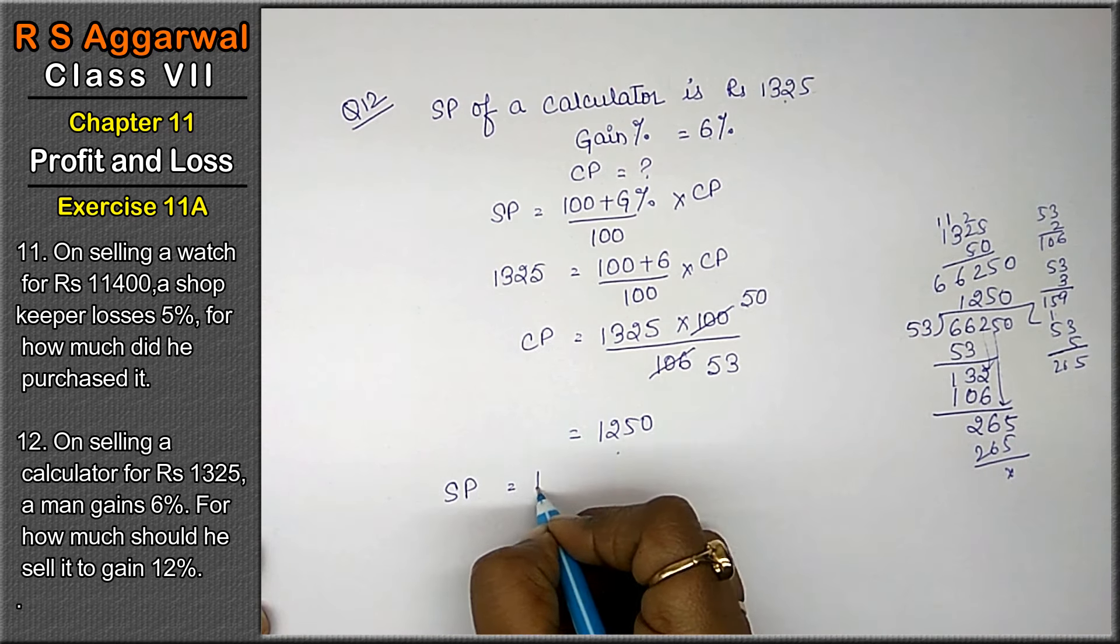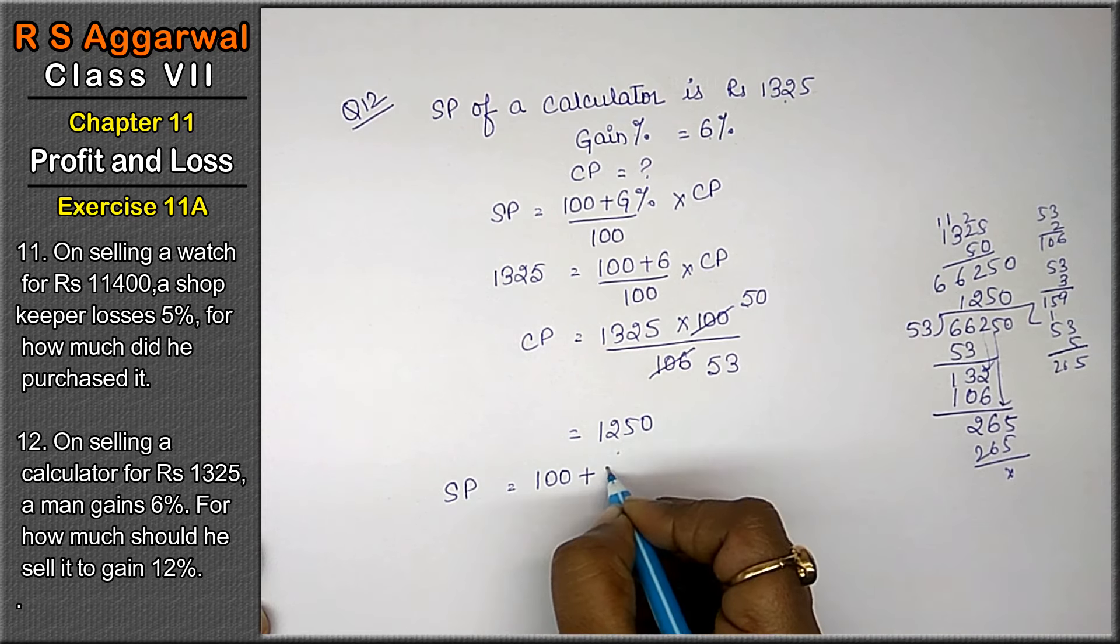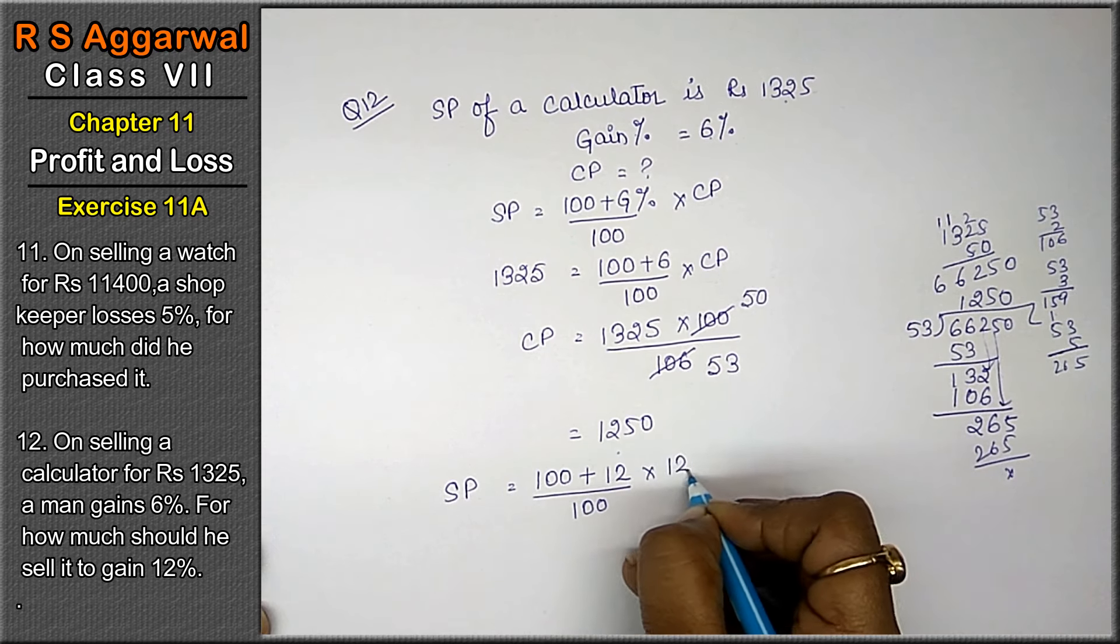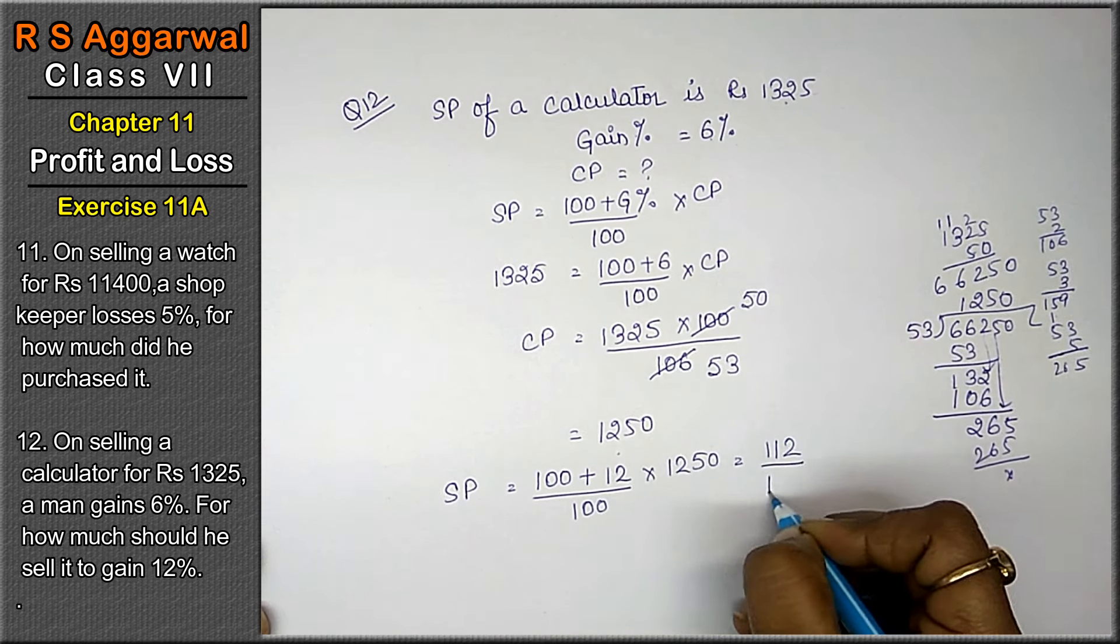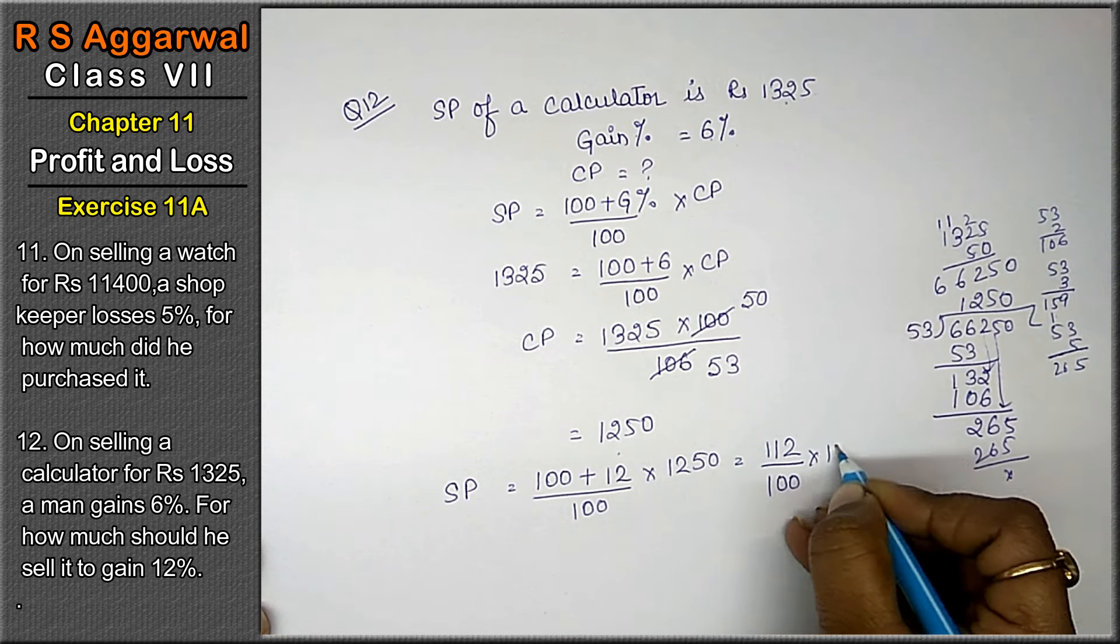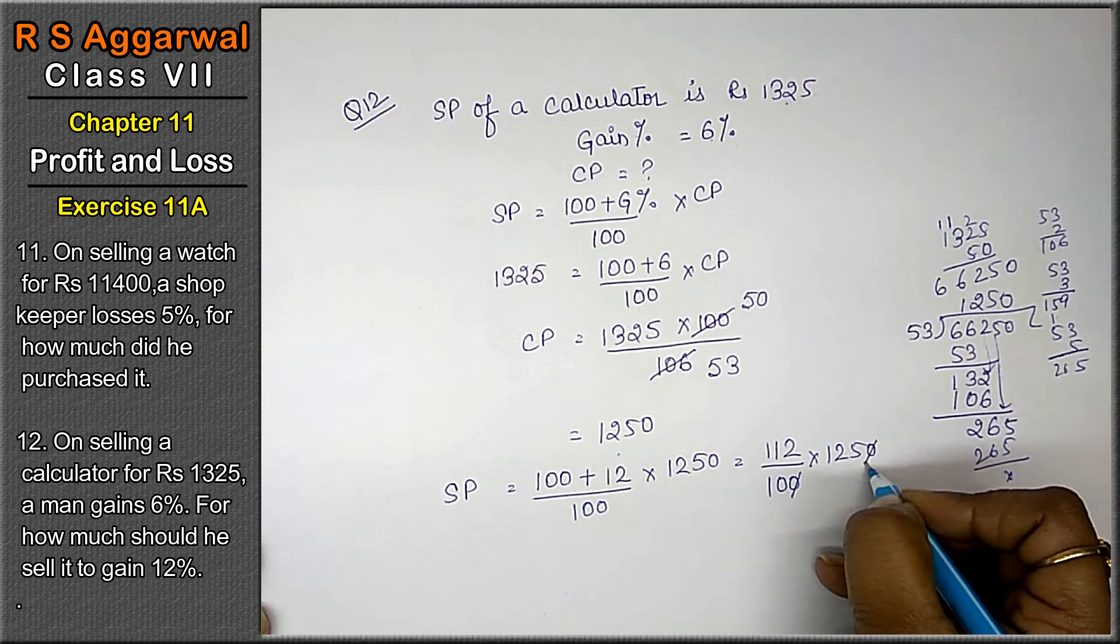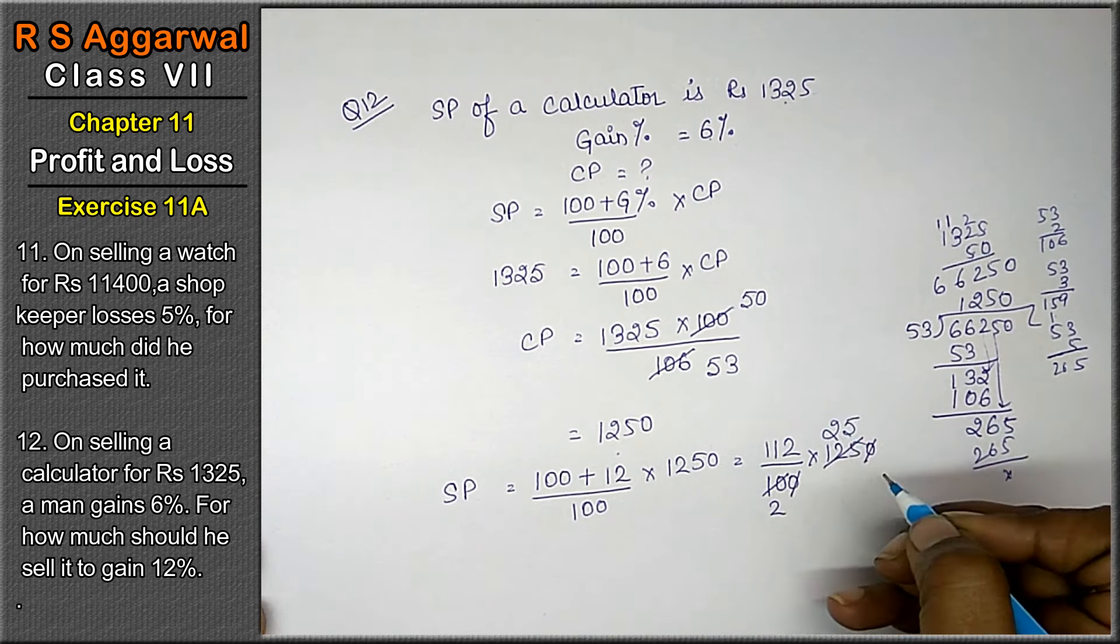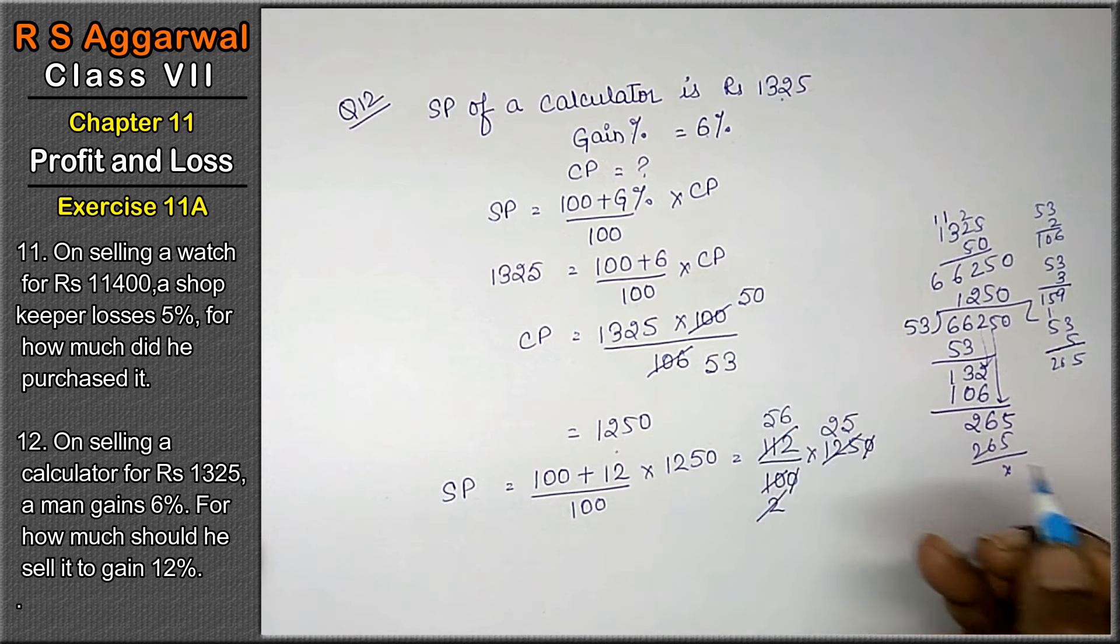Gain percentage is now 12, so (100 + 12) upon 100 into CP is 1,250. That becomes 112 upon 100 into 1,250. 100 and 10 cancel to become 10. 5 × 2 is 10, 5 × 2 is 10, and 5 × 5 is 25. 2 × 1 is 2, 2 × 5 is 10, and 2 × 6 is 12.